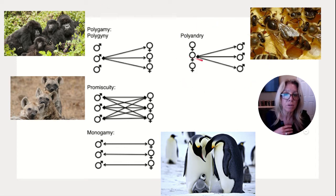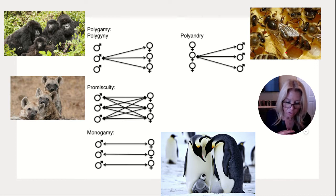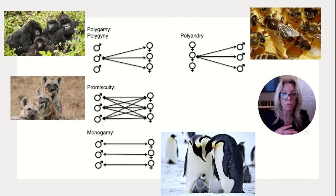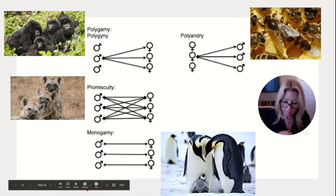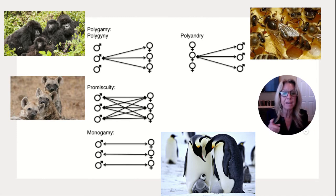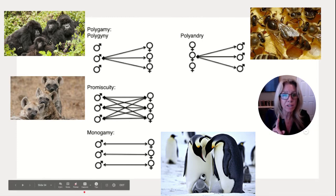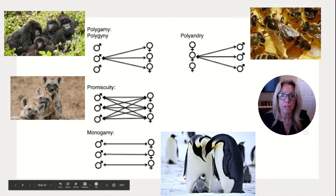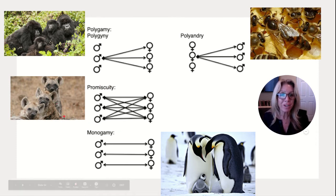Polyandry is a single female with multiple males. This is rare, and occurs when a female mates with multiple males to get more male help — because paternity is uncertain. Monogamy, about 18% of cases, is a pair bond where both males and females assist in raising offspring because it increases their fitness when they work together.